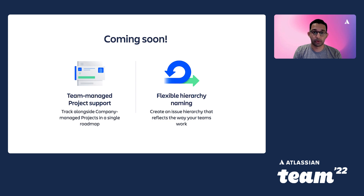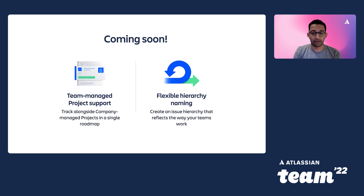I'm excited to share that soon we will be supporting team-managed projects in Advanced Roadmaps. Customers are increasingly using team-managed projects to give teams the flexibility to set up their own projects and run them as they see fit. Soon you'll be able to pull them all together in a single Advanced Roadmap and use all the powerful planning, tracking, and reporting features it brings. We'll also be supporting flexible issue hierarchy naming. For those who are practicing the Scaled Agile Framework (SAFe), this allows you to configure the SAFe issue hierarchy natively in Jira. This also works well for non-software teams who want the powerful planning and tracking features of Advanced Roadmaps without the software-centric terminology.